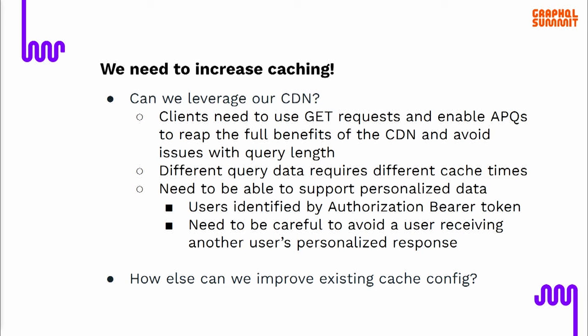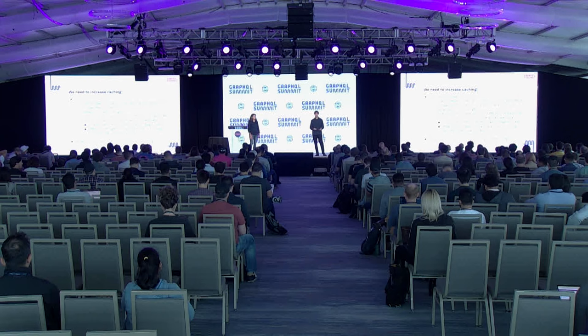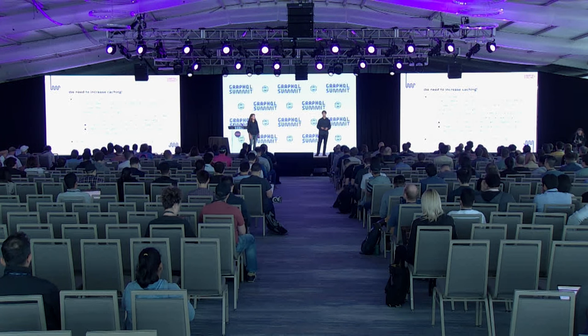The first place we wanted to look was leveraging our CDN for caching. But we need to be very deliberate about how we do this. It's probably not going to do much unless clients are actually using GET requests, so we have to work with them to ensure that. If they're using GET requests, it's best to use APQs to avoid issues around query length. We also need to be considered about the TTLs for what we're caching — MLB has data ranging from live statistics to things that change quite rarely. We need to look at what cache control headers our gateway is returning to the CDN, and what headers the CDN sends to the client, because that's yet another layer of caching.